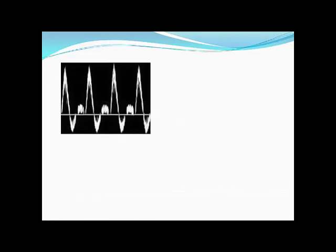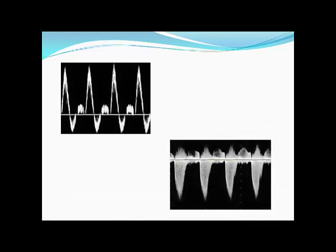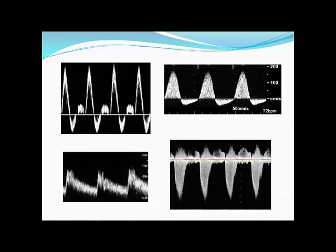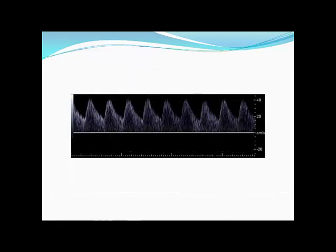Various arteries throughout the body can have very different pulse wave Doppler tracings. Here are a few normal waveforms from different arteries. The umbilical artery has its own characteristic trace.